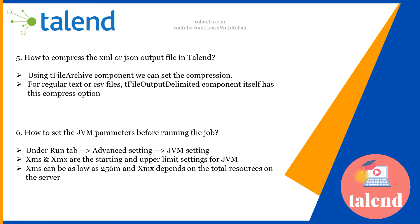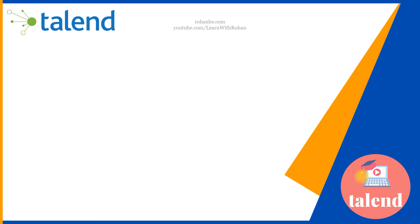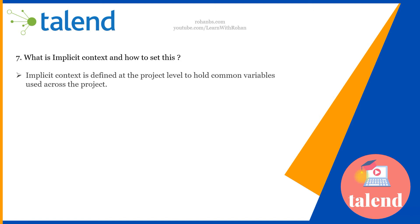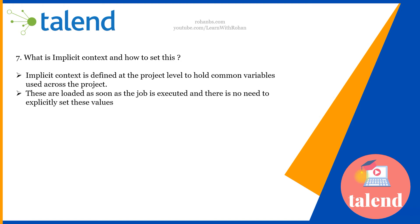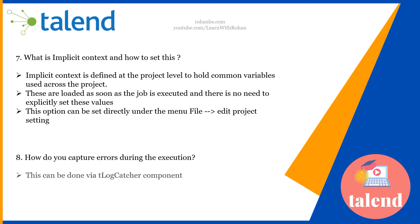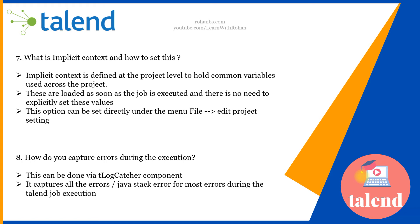The Xms can be as low as 256 megabytes, but Xmx depends on the total resources on your server and needs to be carefully set. The next question: what is implicit context and how is it set? Implicit context is defined at the project level and is applicable for all jobs in that project. It is implicitly loaded as soon as a job is executed, so you don't need to use a context load component explicitly. This setting is done under File menu, then Edit Project Settings, where you specify the implicit context.